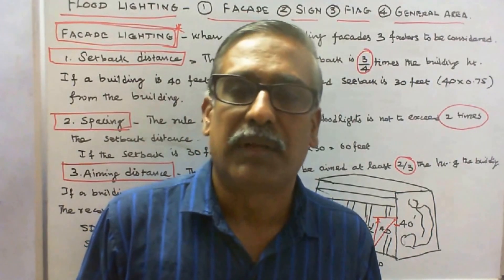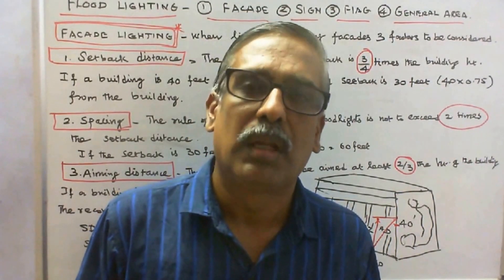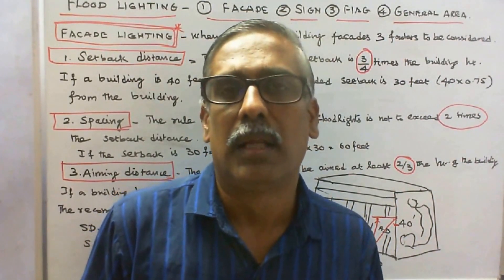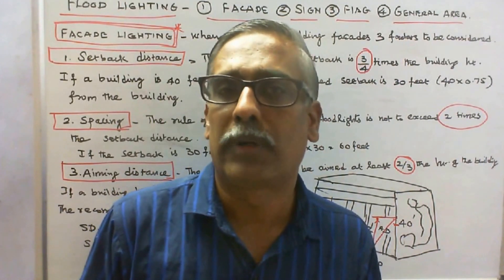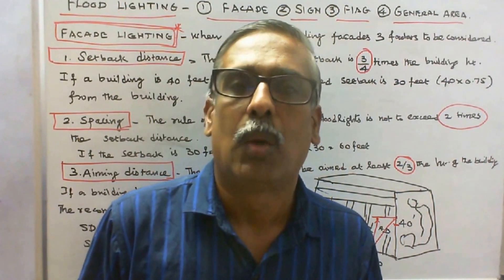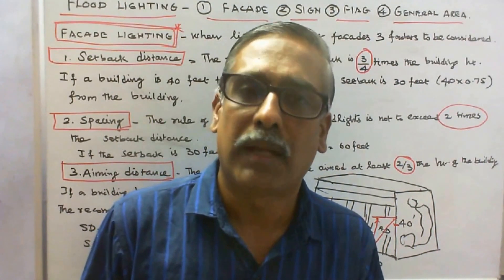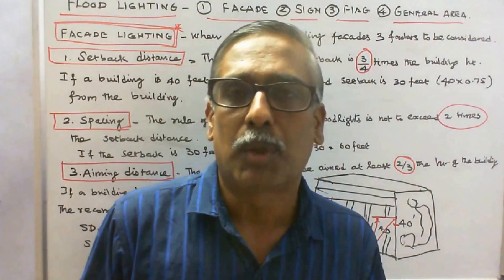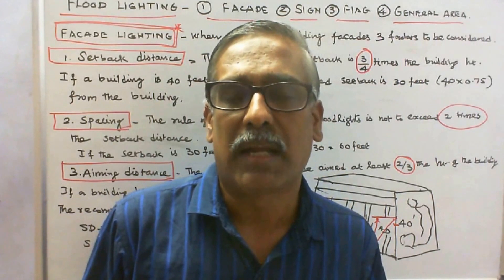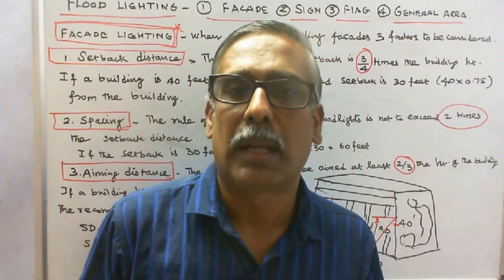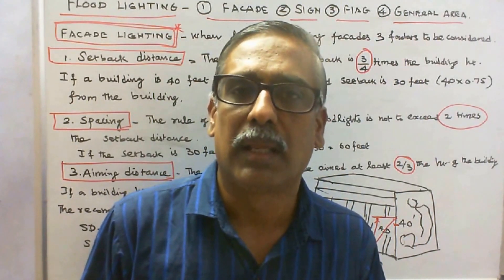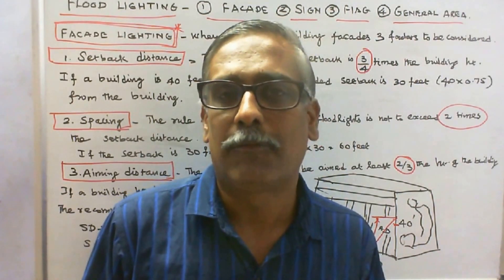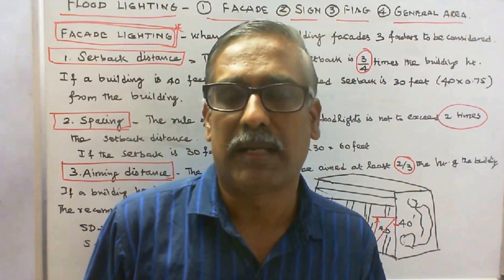This class we discuss about types of flood lighting. There are four types: number one, facade lighting; number two, sign lighting; number three, flag lighting; number four, general lighting.